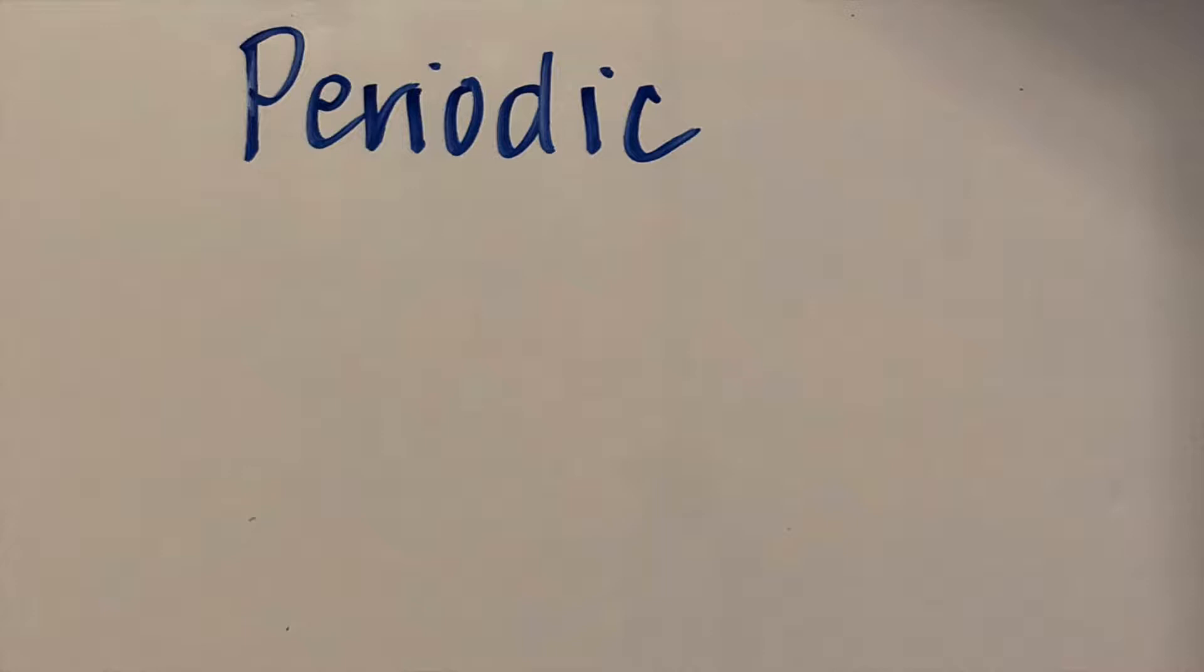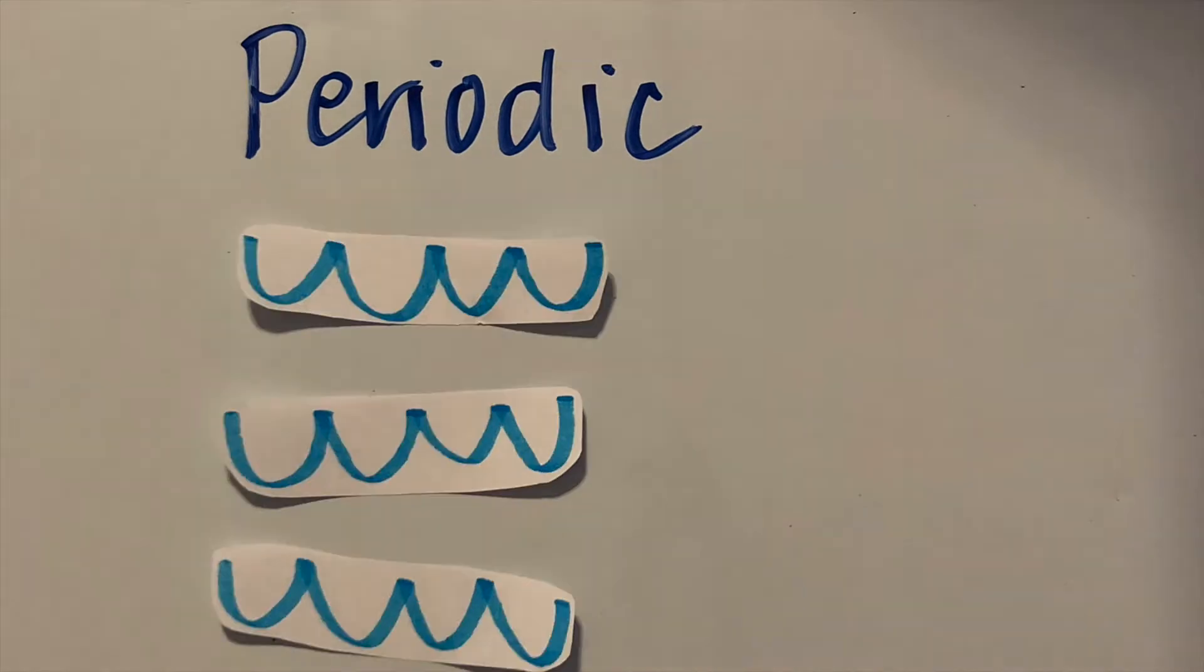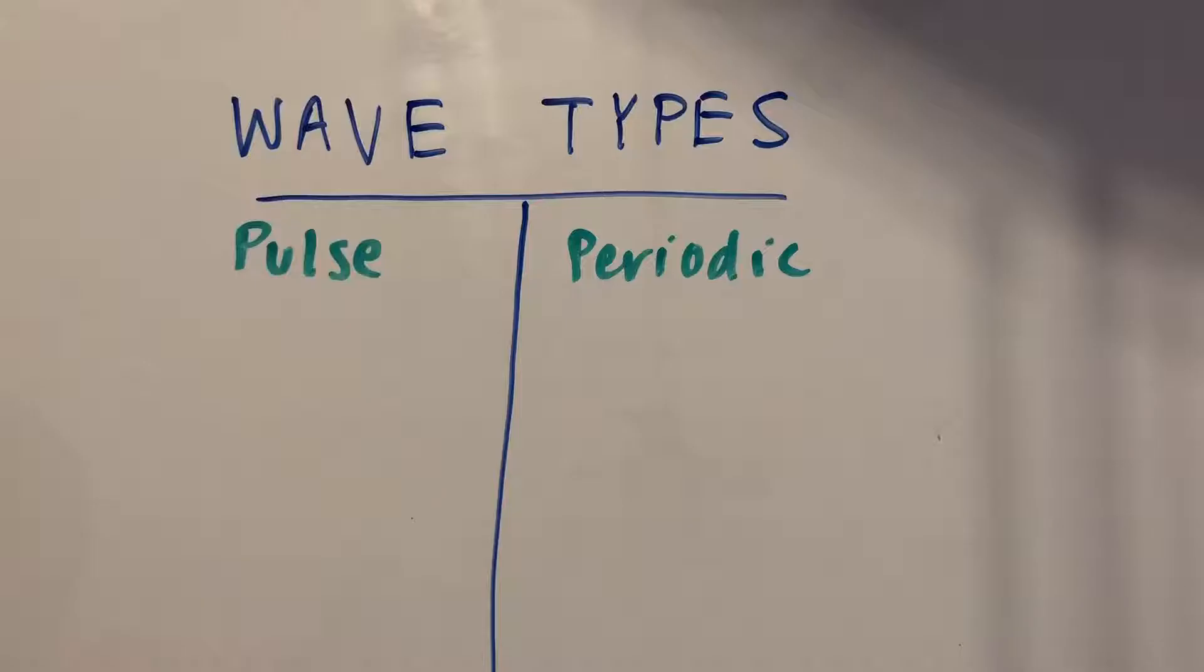Periodic waves, on the other hand, come from a source of disturbance that continuously adds energy at a certain frequency. Instead of just one ripple, you'll see many moving down at a constant rate.